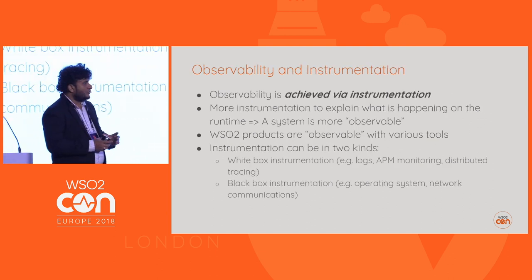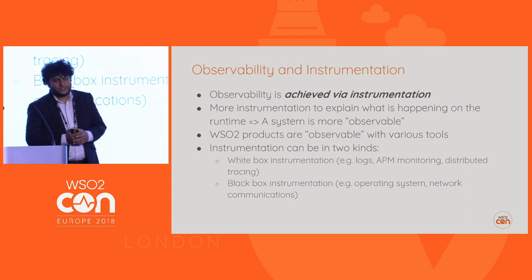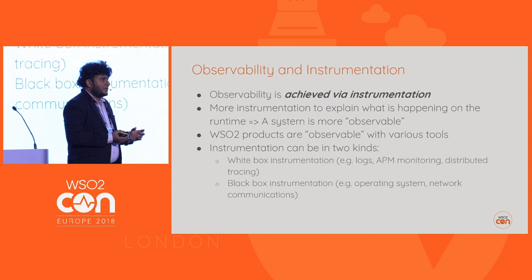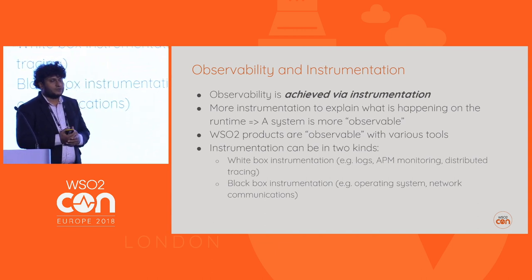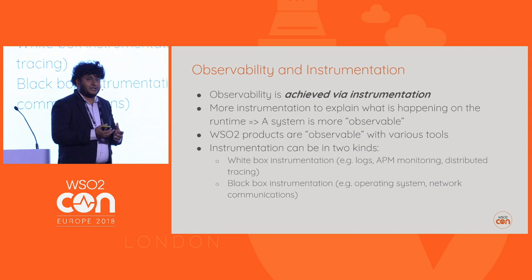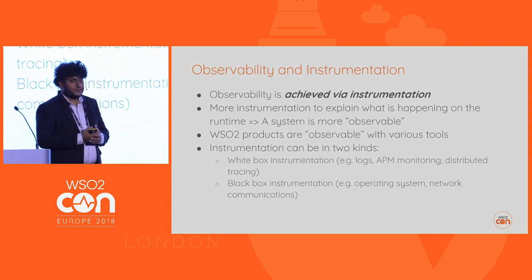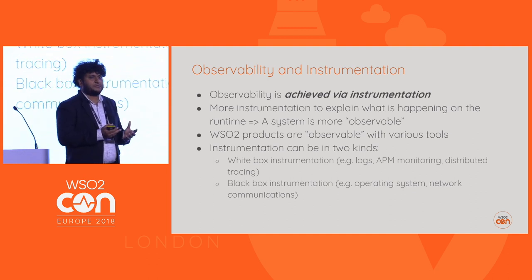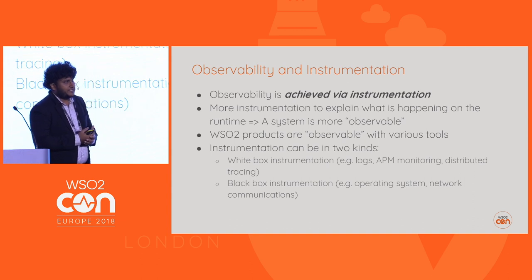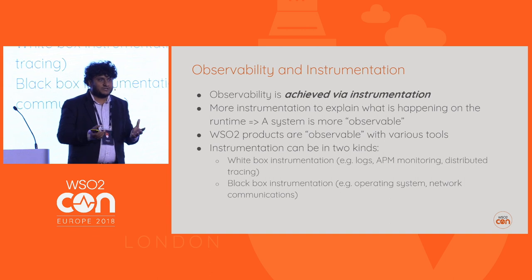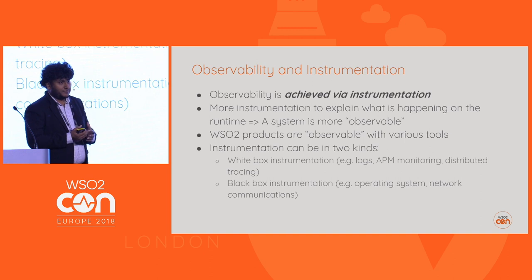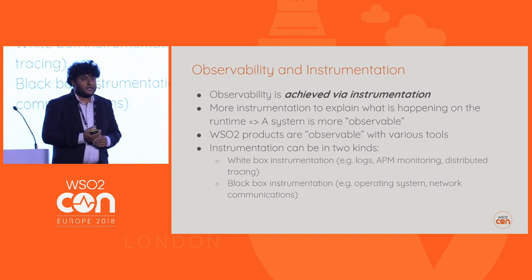So how do you get observability? Observability mainly comes from instrumentation. Instrumentation is basically augmenting your system to give additional information to help understand the situation. The more instrumentation you add, the more observable the system becomes. Our WSO2 products are observable with various tools we have, from the various approaches we have implemented.